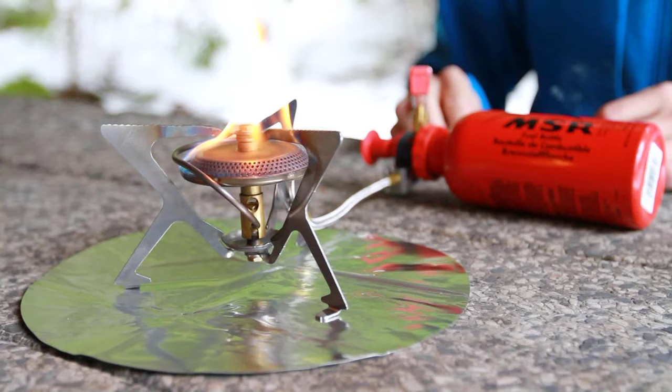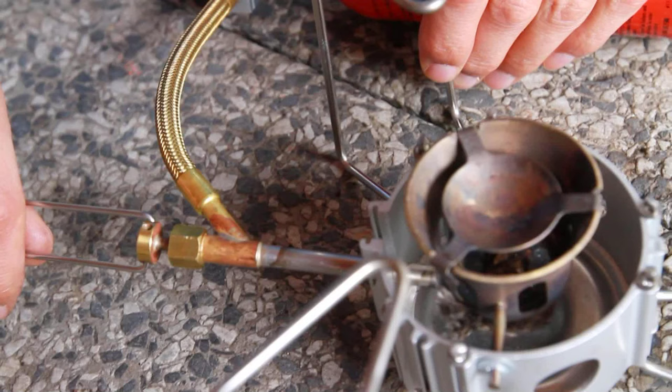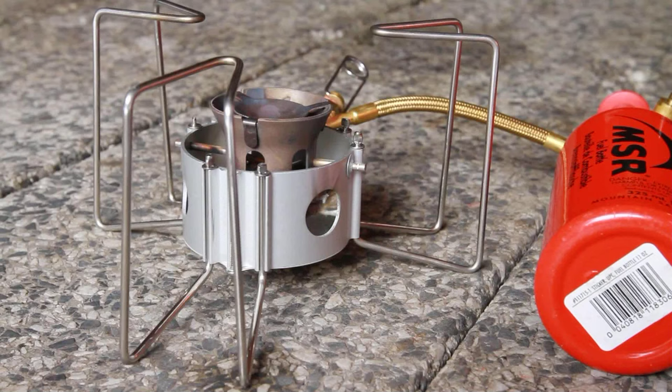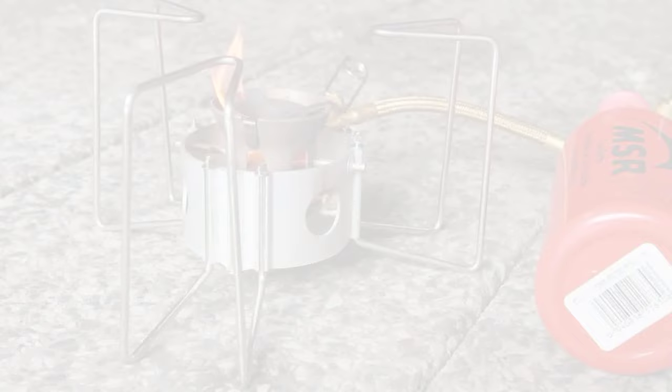On the SimmerLite stove, the fuel collects in the top of the stove. Hold a flame to the burner head to ignite. In the XGK and Dragonfly stoves, the fuel collects in the burner head and on a wick in the body of the stove. Ignite the fuel by holding a flame through holes in the stove body.